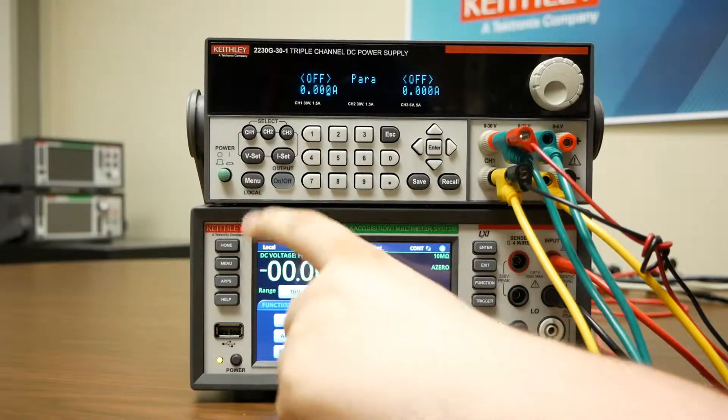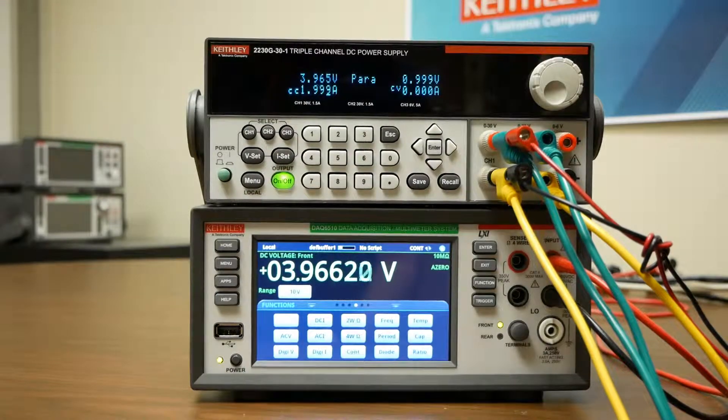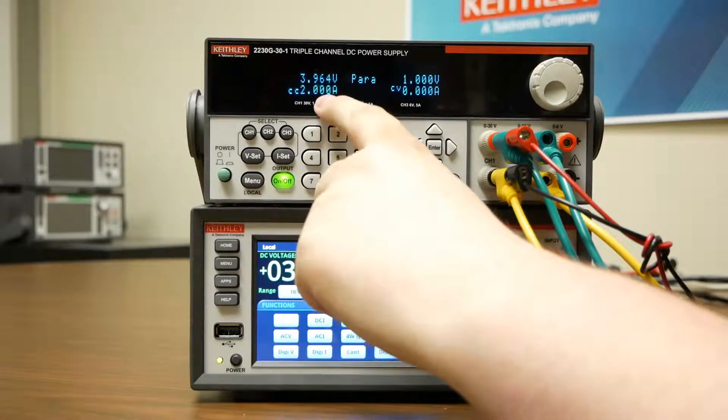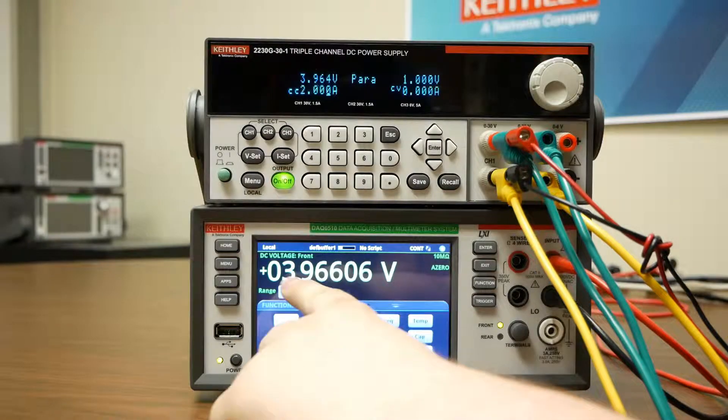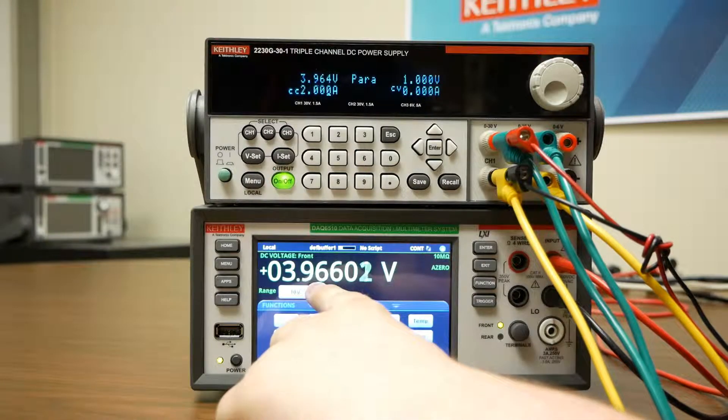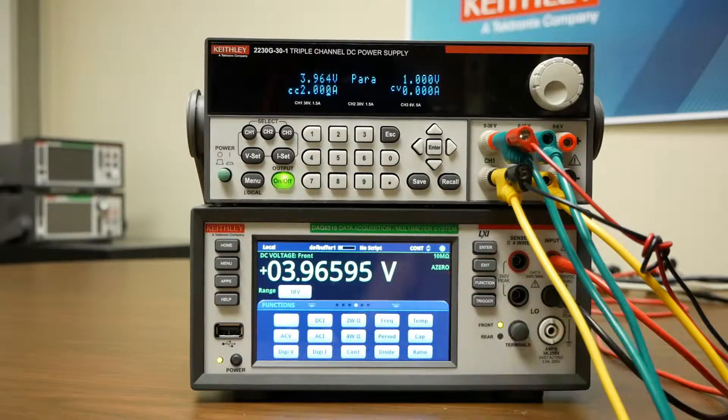Now we should be configured. We'll press output on, and here we can see we're getting about 4 volts and 2 amps, and down here we see we're getting just about 4 volts, which agrees up here, and 2 amps.